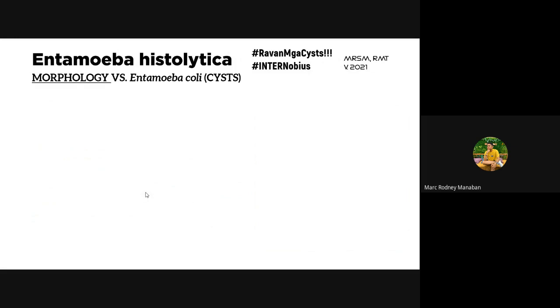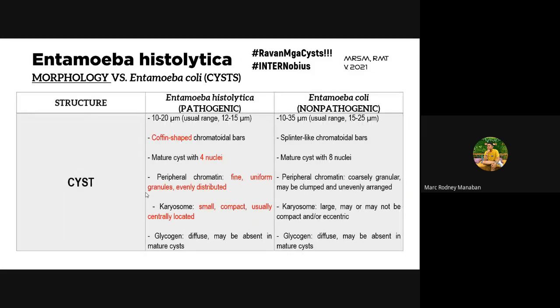We'll now proceed to the morphological stages — comparing the cysts and trophozoites of Entamoeba histolytica with Entamoeba coli. Entamoeba coli is non-pathogenic. For E. histolytica cysts, the size is about 10–20 micrometers, range 12–15 micrometers. Entamoeba coli cysts are larger.